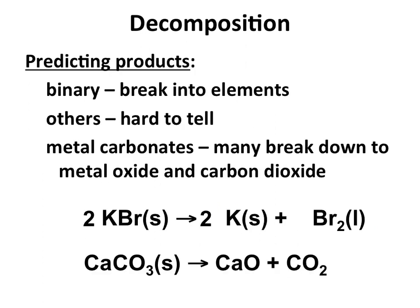When looking at decomposition reactions, predicting products is relatively easy when we're dealing with binary compounds. All you need to do is break it into its elemental forms. For example, KBr — this ionic solid — we're going to break it into its potassium and bromine components. We break down potassium into its elemental form, which is just K, a solid. And bromine in its elemental form is Br2. So that gives us our products.